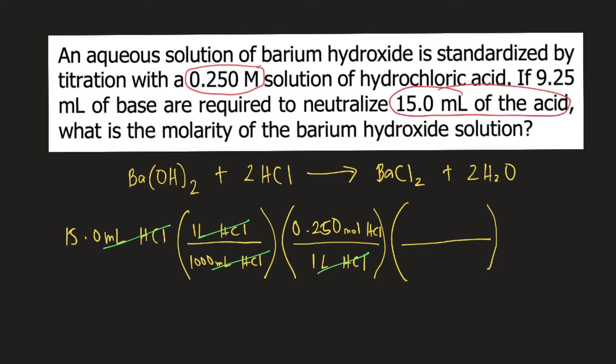We look at the balanced equation. According to the balanced equation, 1 mole of barium hydroxide requires 2 moles of HCl. So we plug that into our equation.